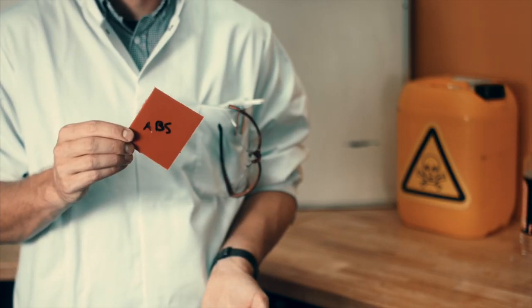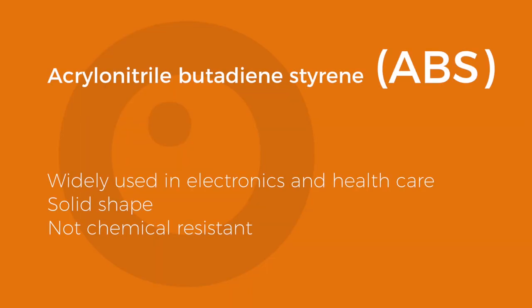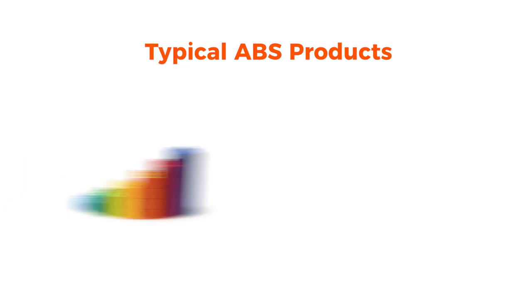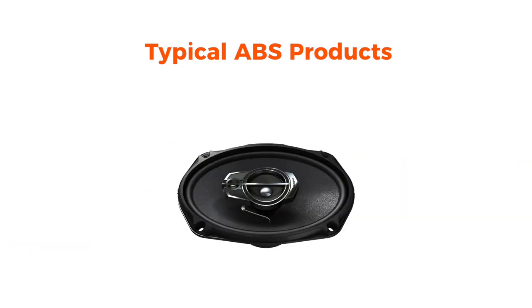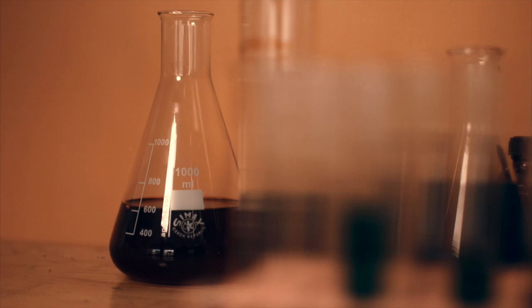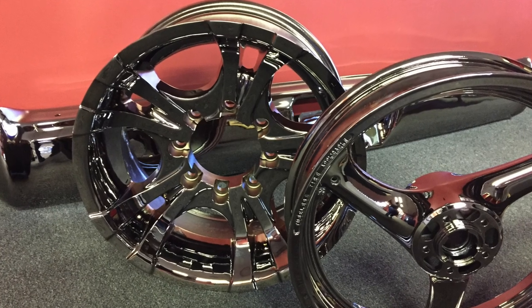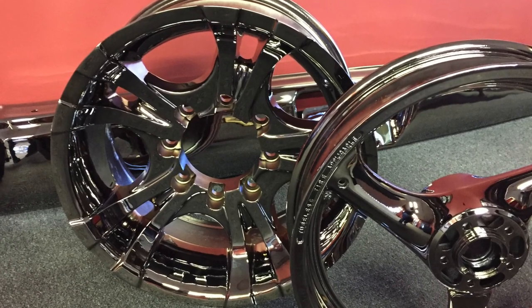Acrylonitrile-butadiene styrene, ABS. ABS is the popular choice for electronic exteriors and medical equipment. Its primary advantage is that it guarantees a solid shape, making it the perfect plastic for toy bricks as well as the parts within your car dashboard. One downside: it's not resistant to chemicals, although it's one of the few plastics that can be coated in chrome.